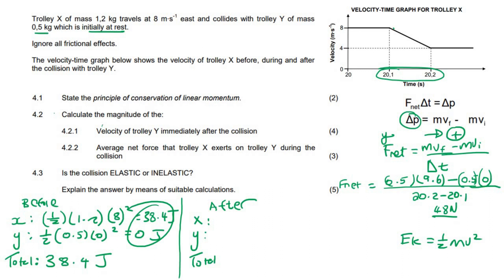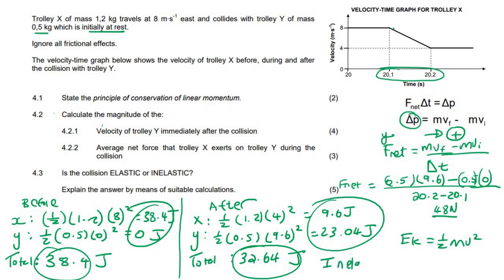Now we're going to look at the total energy after the collision. So for object X, it was going at 4 meters per second. So that's 9.6 joules. And then for object Y, it was going at its final velocity we calculated as 9.6, and that is 23.04. Add these two numbers together, 32.64. Okay, are these two numbers the same? No, they're not. So that is inelastic.